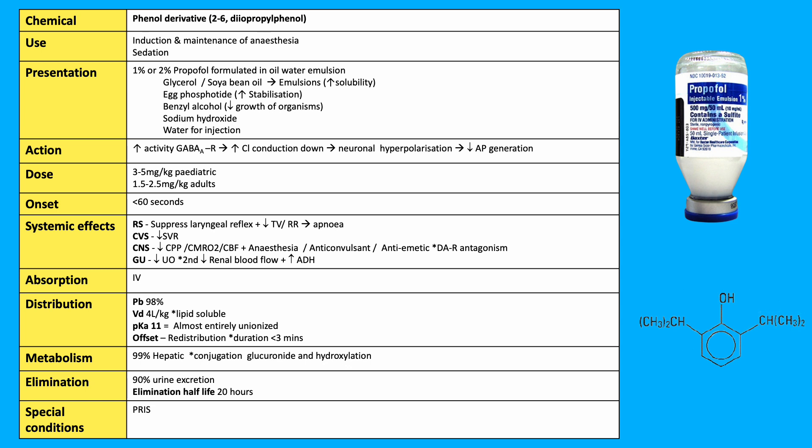It works by increasing GABA-A activity. Pediatric doses are 3 to 5 mg/kg as a bolus. Adult doses are 1.5 to 2.5 mg/kg as a bolus.